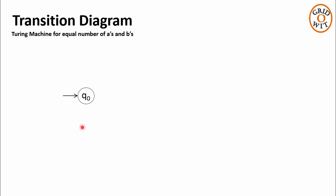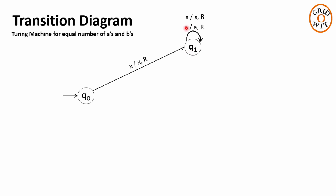Now let us see the transition diagram for this Turing machine to accept all the strings having equal number of As and Bs. Initially, state q0 is pointing to the symbol A. On reading symbol A, it will replace it with X, take the right move, and change its state to q1. Now in the first iteration, q1 will skip only As and move towards the right. But from the second iteration onwards, q1 will encounter both As and Xs. So q1 will skip both As and Xs, moving towards the right without changing the state. And as soon as it encounters symbol B, q1 will replace it with X, take a left move, and change its state to q3.